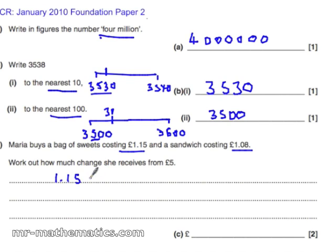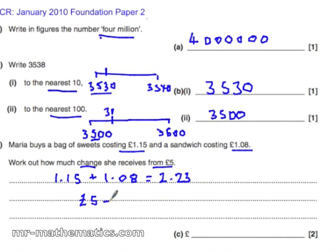Now, you buy a bag of sweets costing £1.15 and £1.08. Rather than doing that using place value, you can calculate it on a calculator and it comes out as £2.23. Now, how much change? This is the difference between £5 and £2.23, so we do that with a subtraction and it comes out as £2.77. The notation here is important.